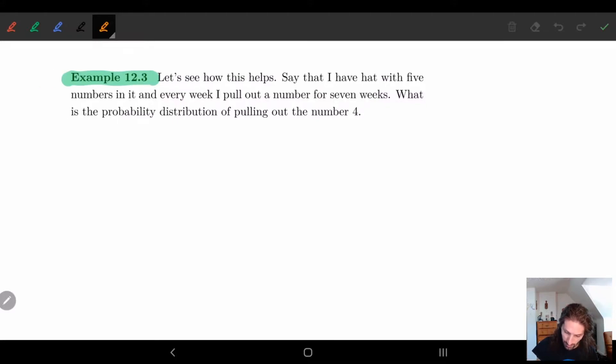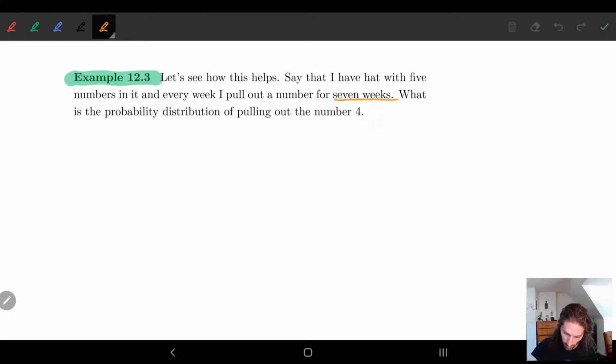And I do this for seven weeks. So I have seven weeks, and I have five numbers. So obviously here I forgot to mention that I replaced the numbers, so with replacement, replacing the numbers each time. And I ask what is the probability distribution of pulling out the number four? So I care about what's the chance of getting number four during these seven weeks.